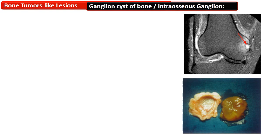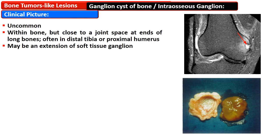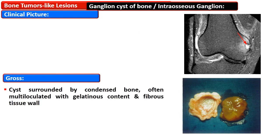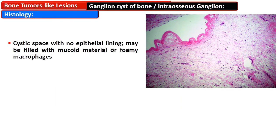Ganglion cysts of the bone, or intraosseous ganglions, are uncommon lesions present within the bone but close to a joint space at the end of long bones, often the distal tibia and proximal humerus. They may be an extension of a soft tissue ganglion. On gross examination, the cyst is surrounded by condensed bone, often multiloculated with gelatinous content and a fibrous tissue wall. The cystic spaces have no epithelial lining and are filled with mucoid material, with foamy macrophages also present.